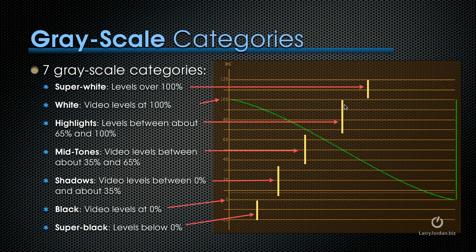The section immediately below the 100% line are called highlights. This is like the top third of your grayscale values from 65 to 100%. This is where the energy and the enthusiasm of your image lies.